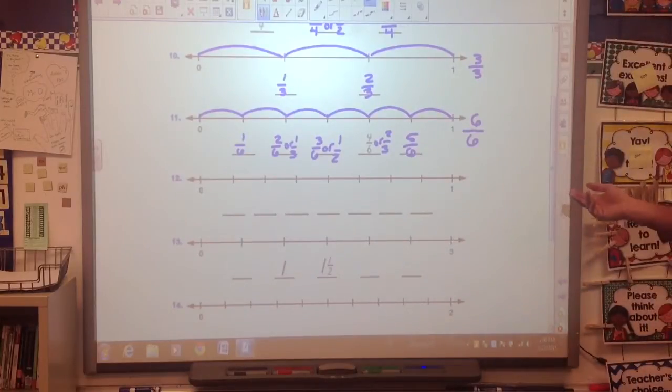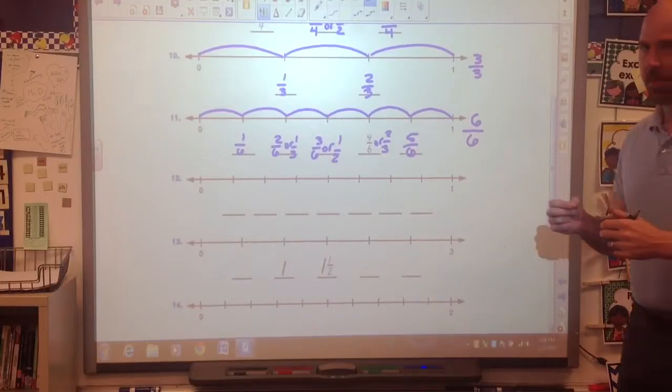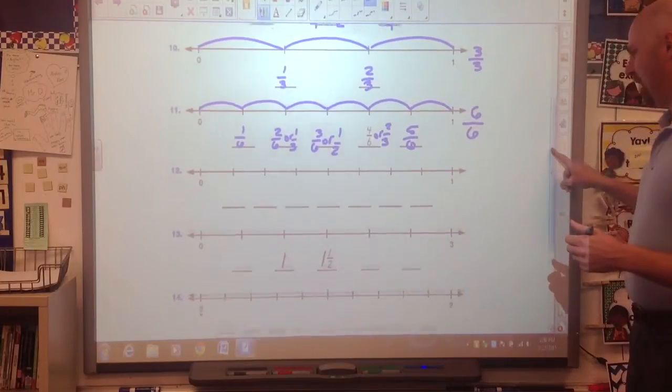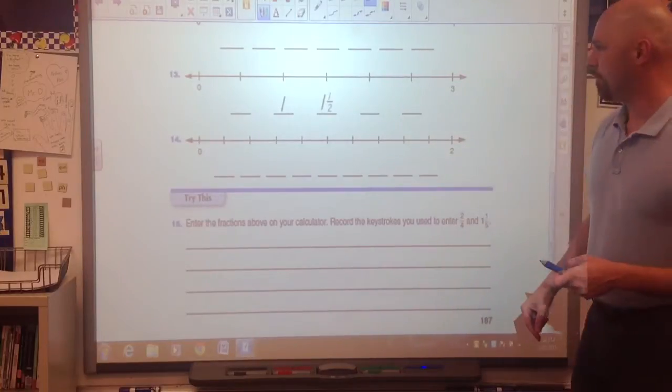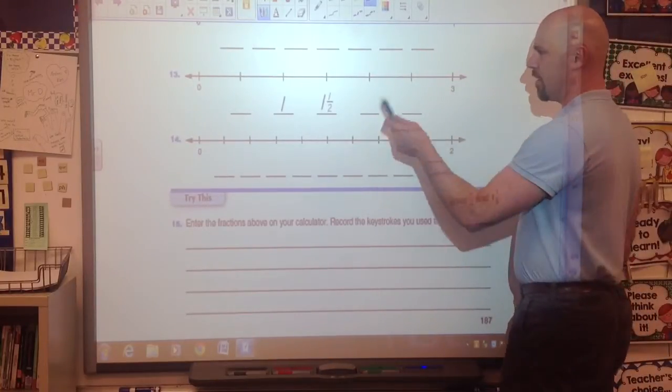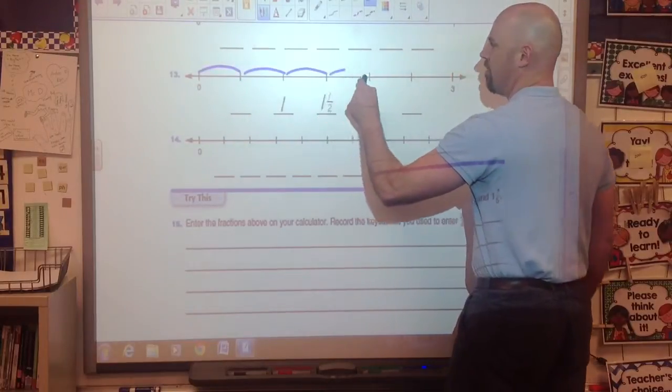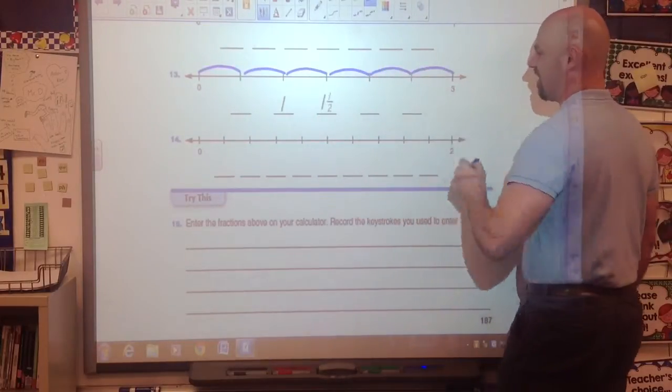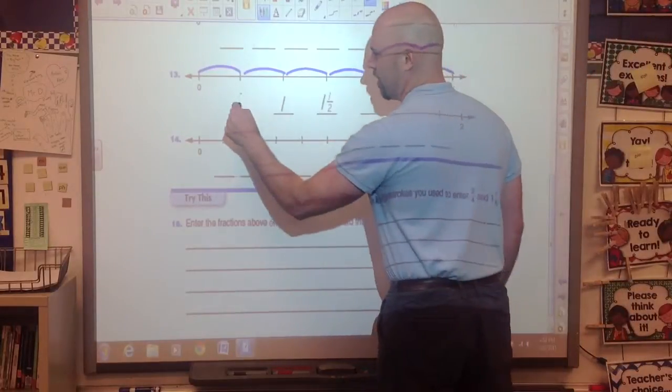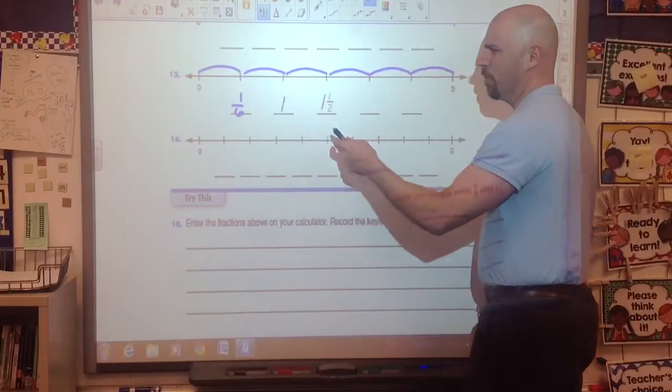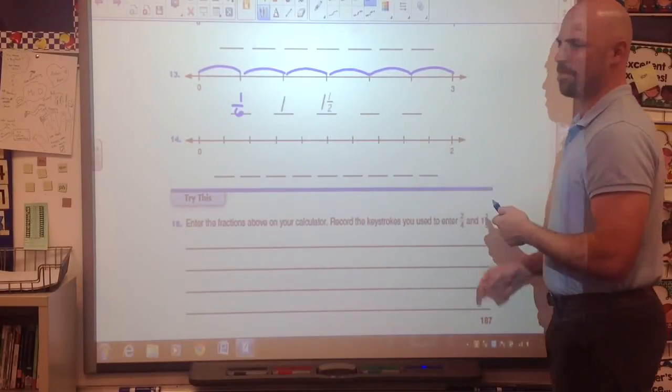So we're seeing the jumps work. The problem is we throw a curveball at you now, and the curveball is down below here. So let's look at number 13 here. On number 13, let's count the jumps. One, two, three, four, five, six. Oh, it's six jumps, so it must be one-sixths. One-sixths, one whole, one and a half, one, two, that doesn't make any sense at all.